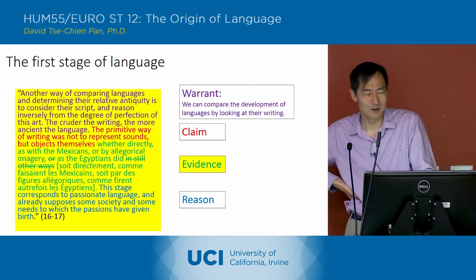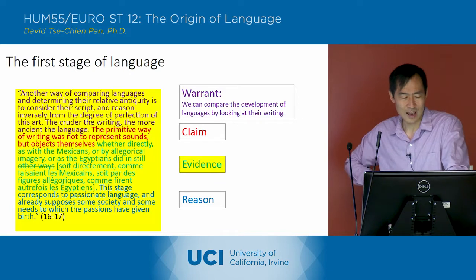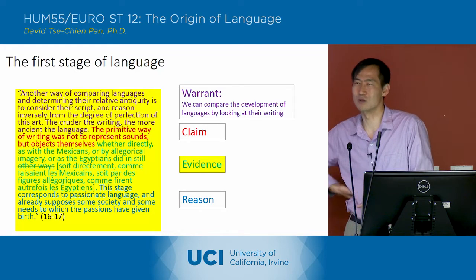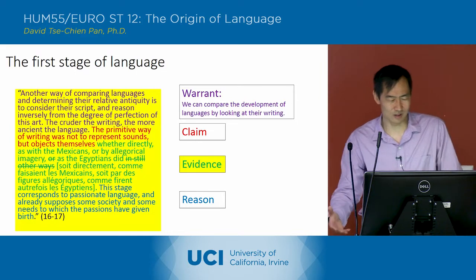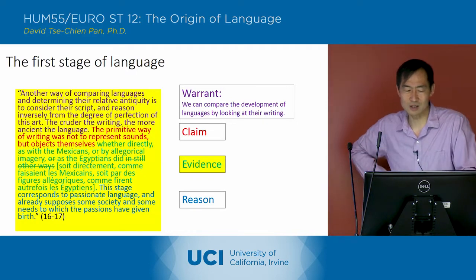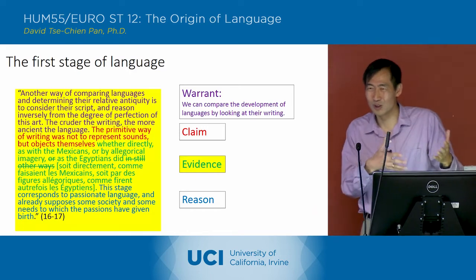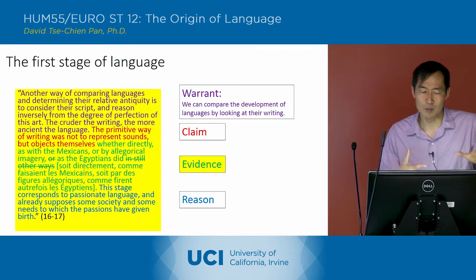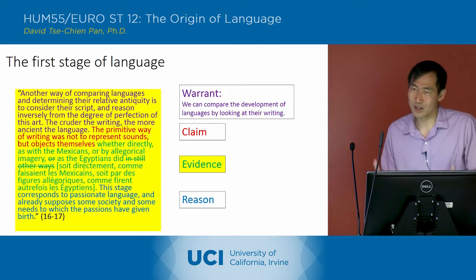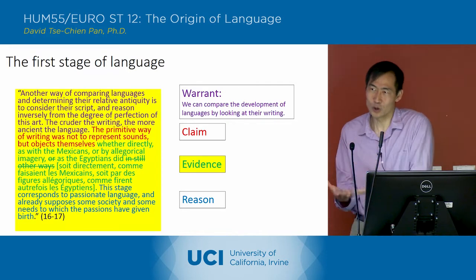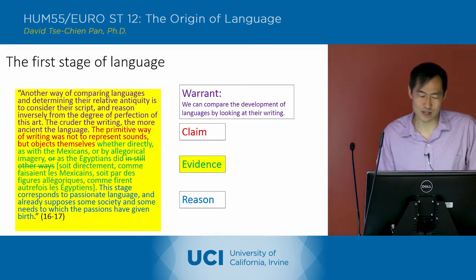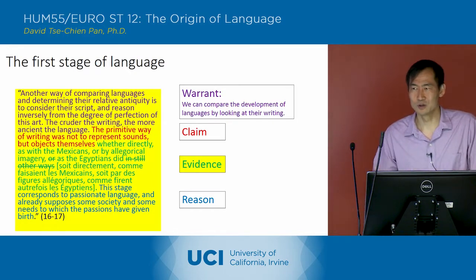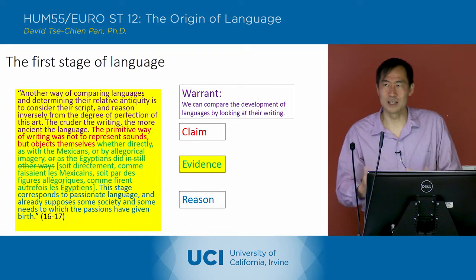If you look at the French, it's very clear that he's saying directly as with the Mexicans, or by allegorical imagery as with the Egyptians — he's doing this parallel. The examples are Mexican hieroglyphics and Egyptian hieroglyphics, and he's saying both of those represent not sounds, but objects themselves. That's the earliest stage of language, and it corresponds to a passionate language that presupposes a primitive society in which passions and needs are linked together.